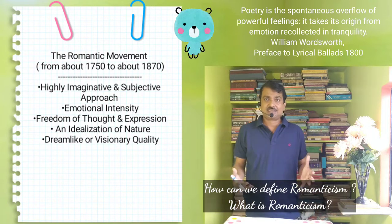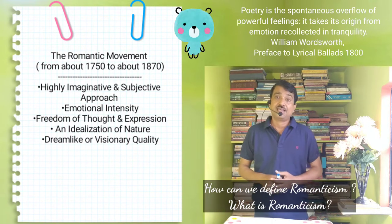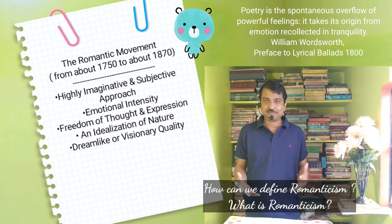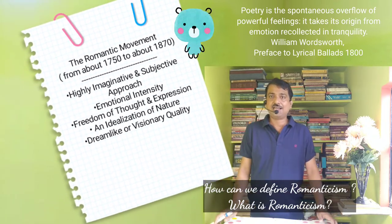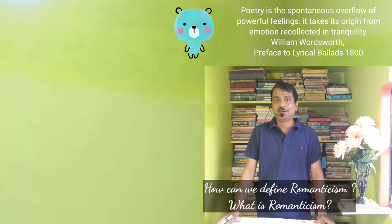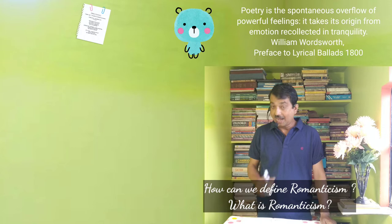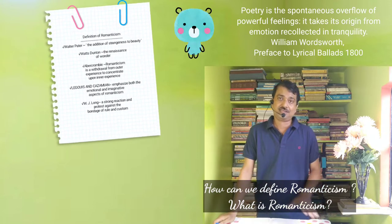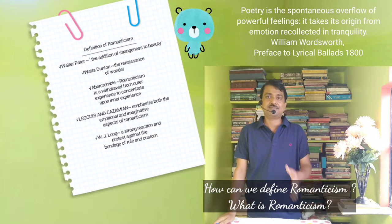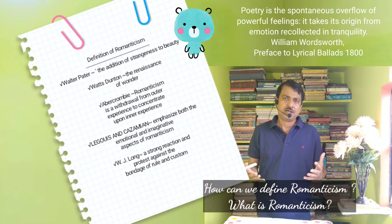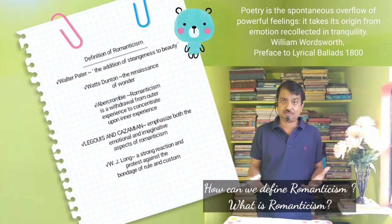There is emotional intensity, freedom of thought and expression, and idealization of Nature, and a dreamlike or visionary quality is also there. The term Romantic first appeared in 18th century English and originally meant romance-like — that is, resembling the fanciful character of medieval novels or medieval romances.